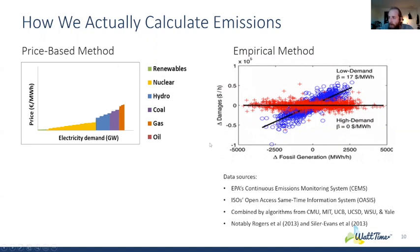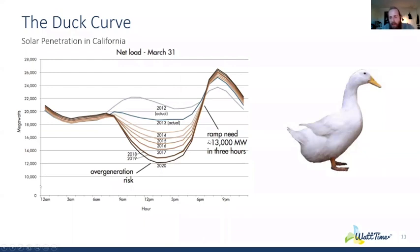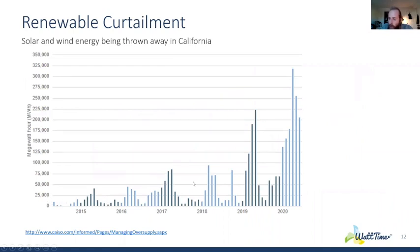Looking at California specifically — everyone talks about the duck curve and the spring ramp, always shown on March 31st when there's an oversupply of renewable energy. We're throwing away increasing gigawatt-hours of renewable energy every year because the grid is so inflexible. We're starting to see that emerge in New York as well, especially upstate with large amounts of wind. With New York's aggressive offshore wind targets, there'll be periods of surplus renewable energy where increasing load would actually prevent certain renewables from being curtailed.